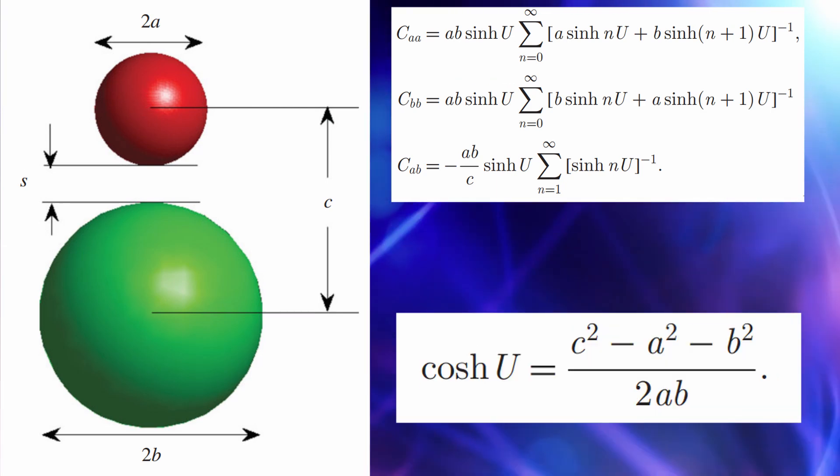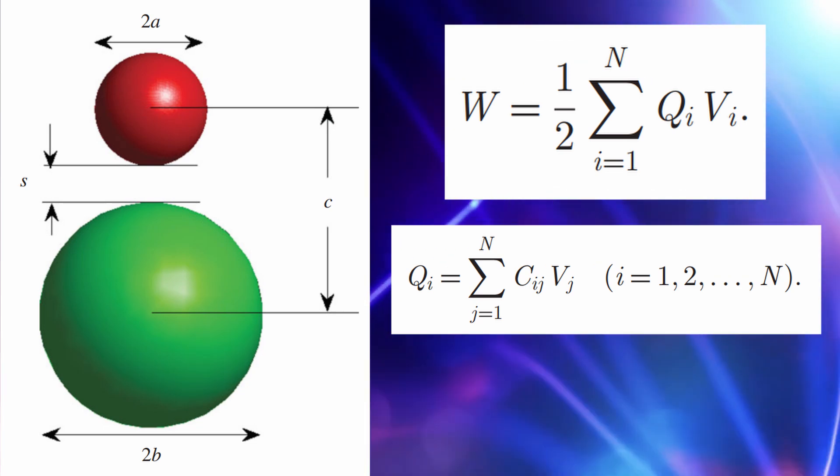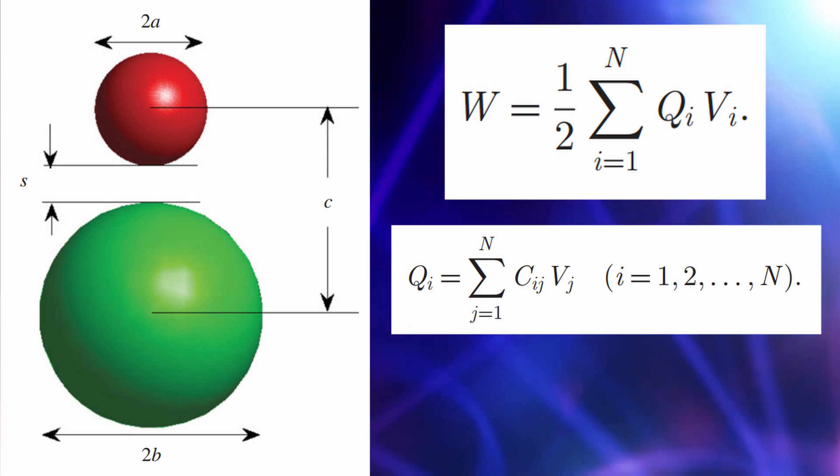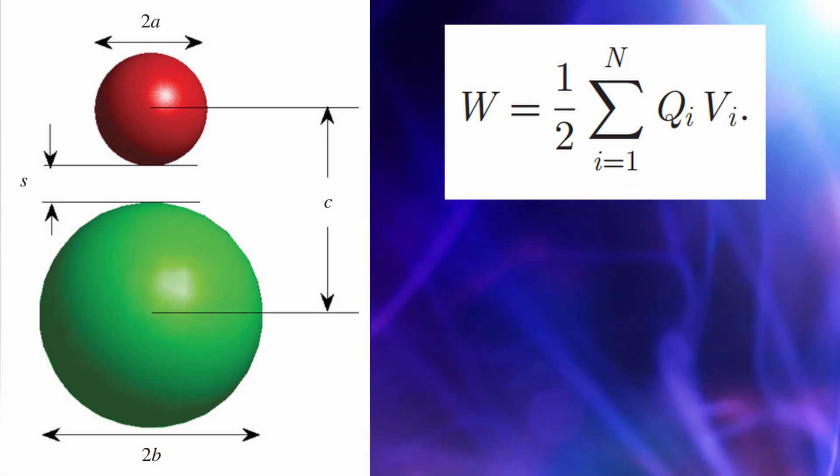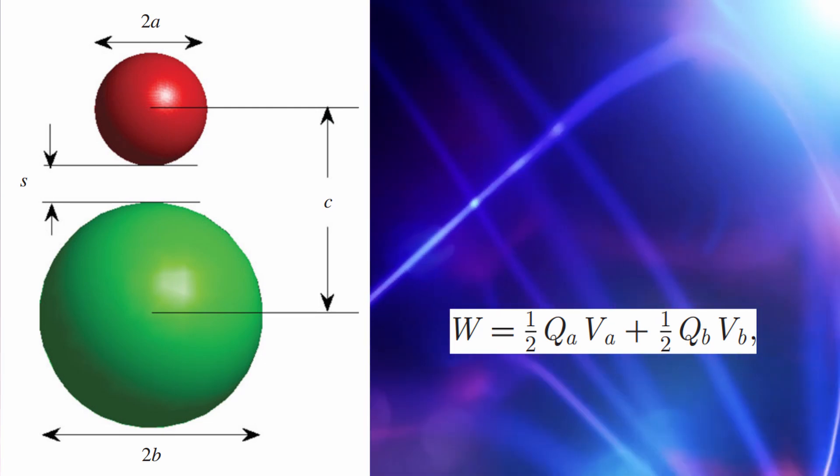Now, it is possible to calculate the electrostatic energy for the specified charges QI or the potentials VI on the conductors. This energy will be a function of the relative position of the conductors themselves. For a two-body system, this would yield W is a half QA VA plus a half QB VB.